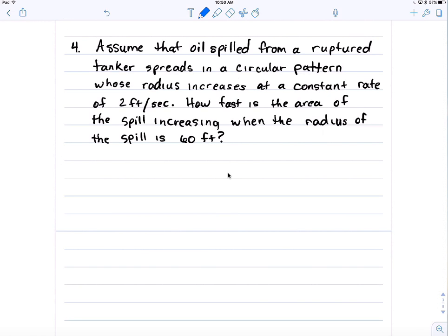Assume that oil spilled from a ruptured tanker spreads in a circular pattern whose radius increases at a constant rate of 2 feet per second. How fast is the area of the spill increasing when the radius is 60 feet?